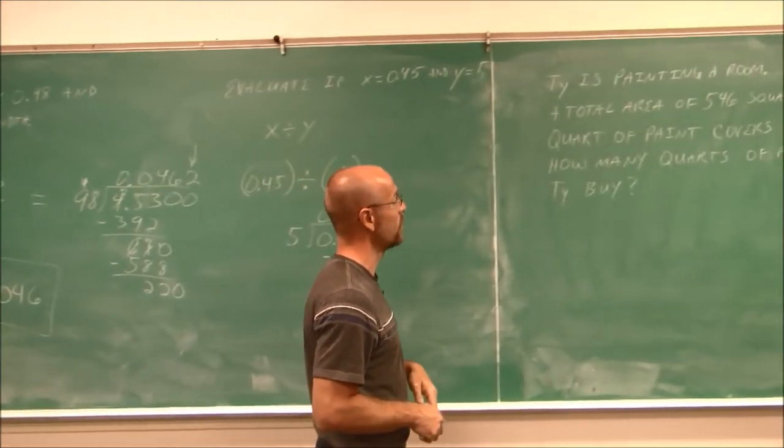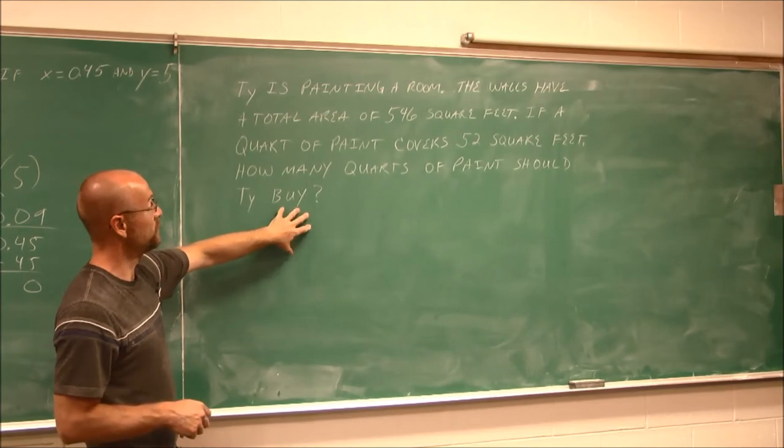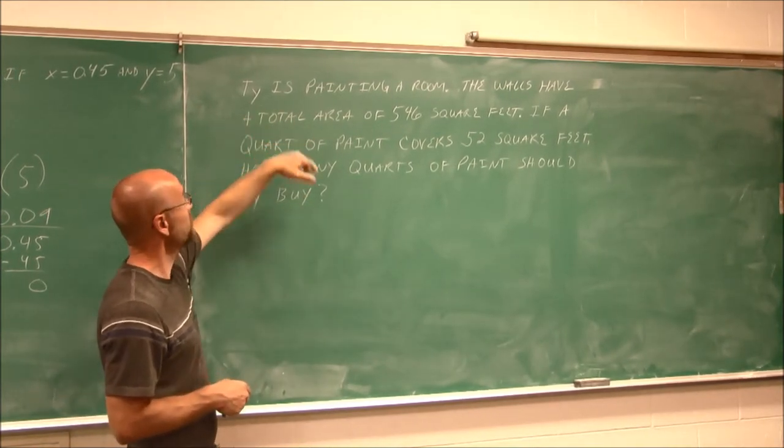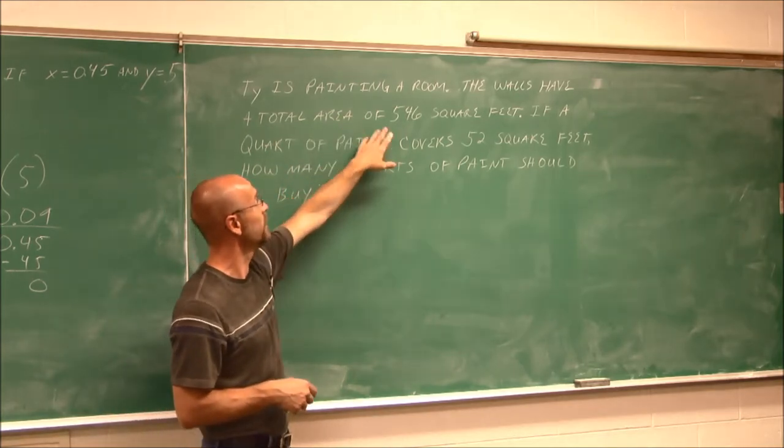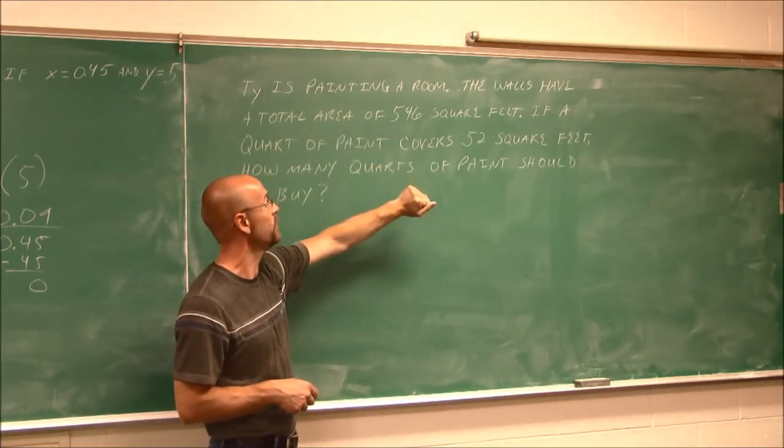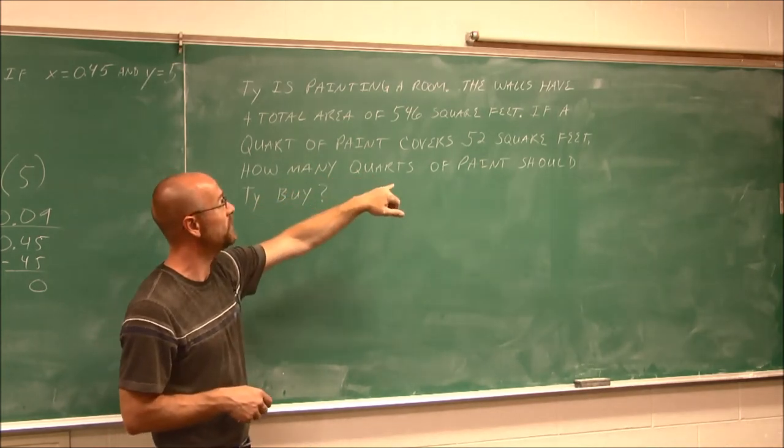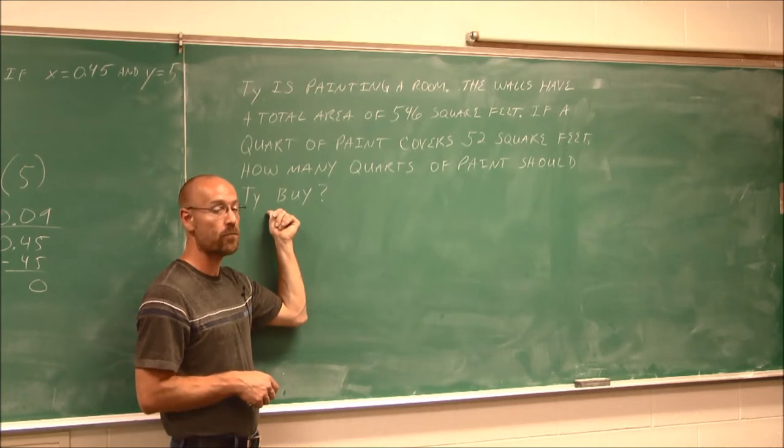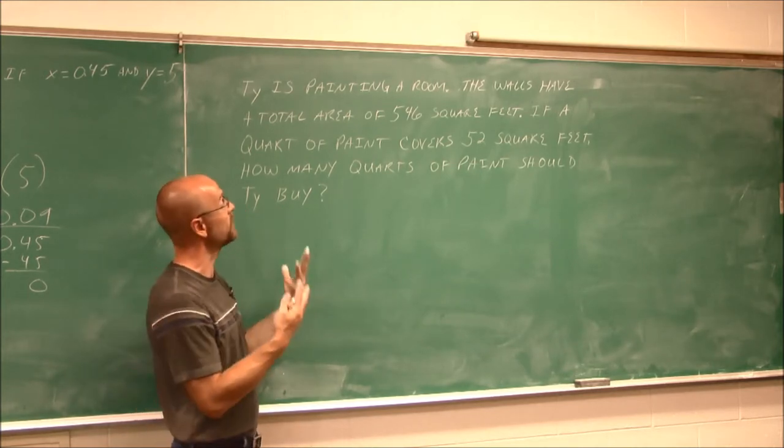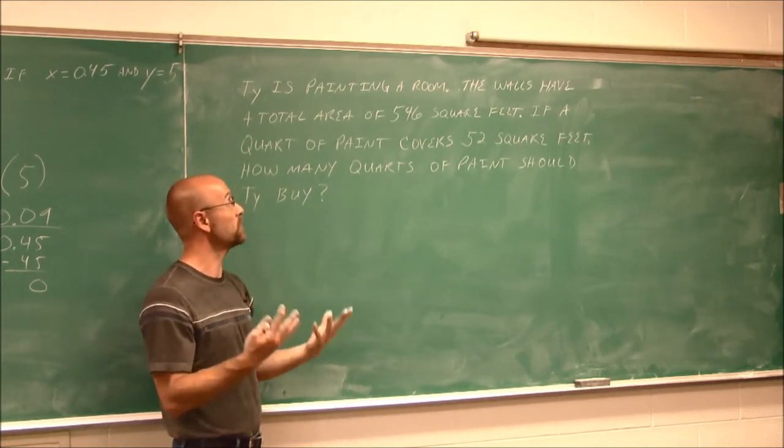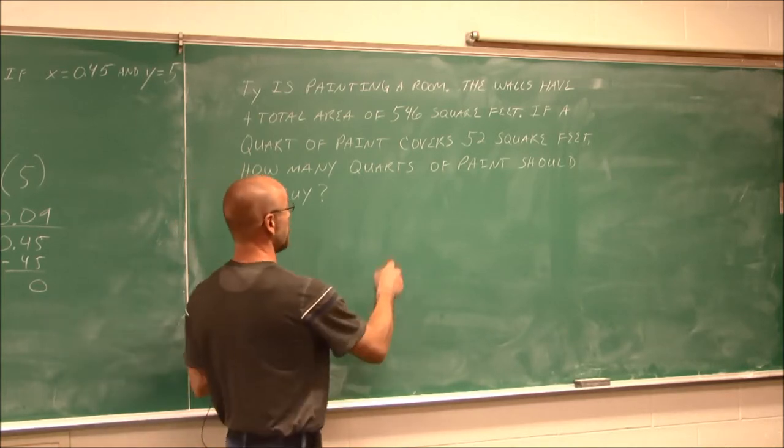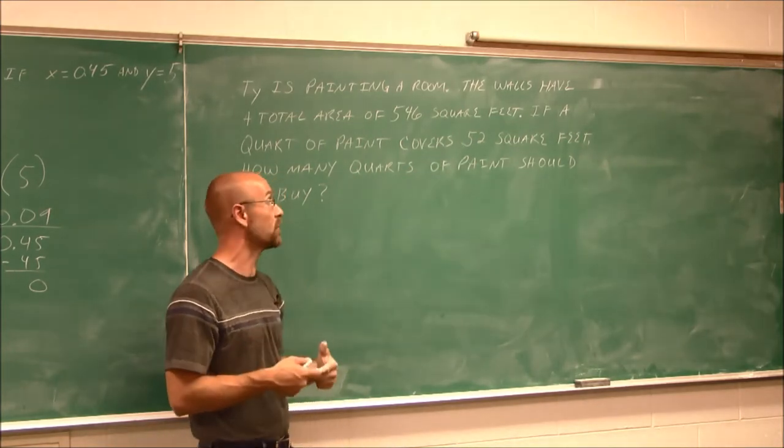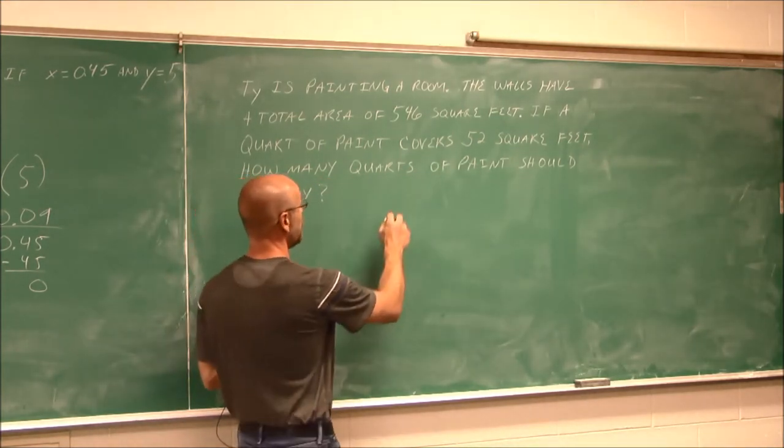One more example where we'll see division and we'll also see decimals. Ty is painting a room. The walls have a total area of 546 square feet. If a quart of paint covers 52 square feet, how many quarts of paint should Ty buy? Well, if we look at these numbers, we see these are nice integers, so there shouldn't be a problem. Well, let's do that division. We have to divide 546 by 52 to determine the number of quarts of paint that Ty needs.